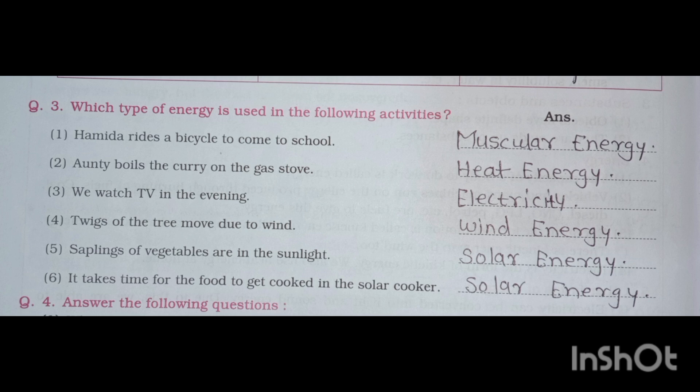Fifth: saplings of vegetables are in the sunlight — solar energy. Sixth: it takes time for the food to get cooked in the solar cooker — solar energy.